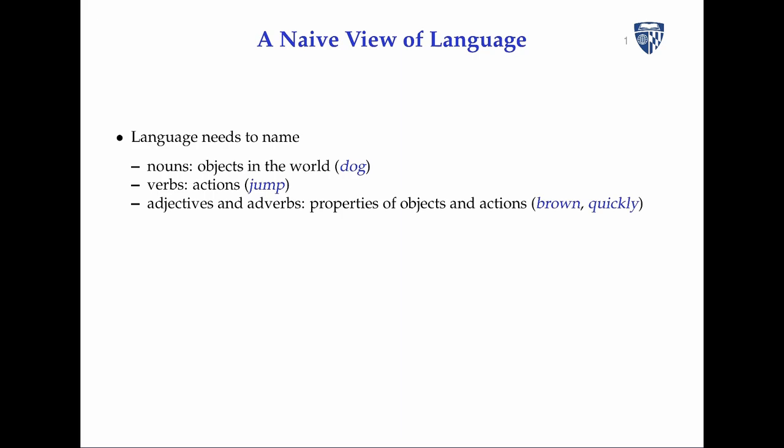As an overview of what role words play in language, here's a naive view. Language needs to name things and uses nouns — objects in the world like 'dog'. It needs to name actions, so it uses verbs like 'jump', and it also needs to name properties of objects and actions, like 'brown' and 'quickly'.